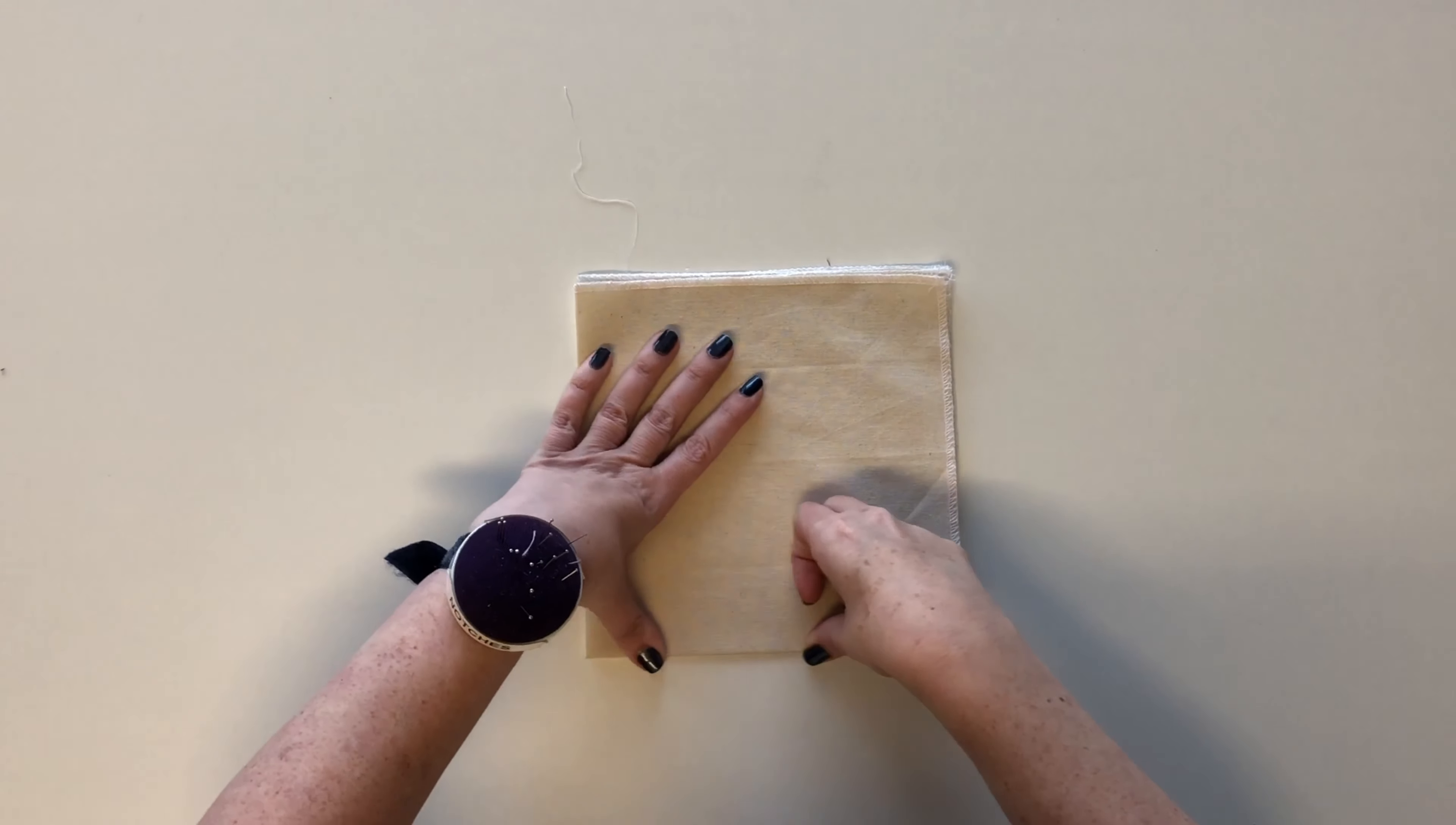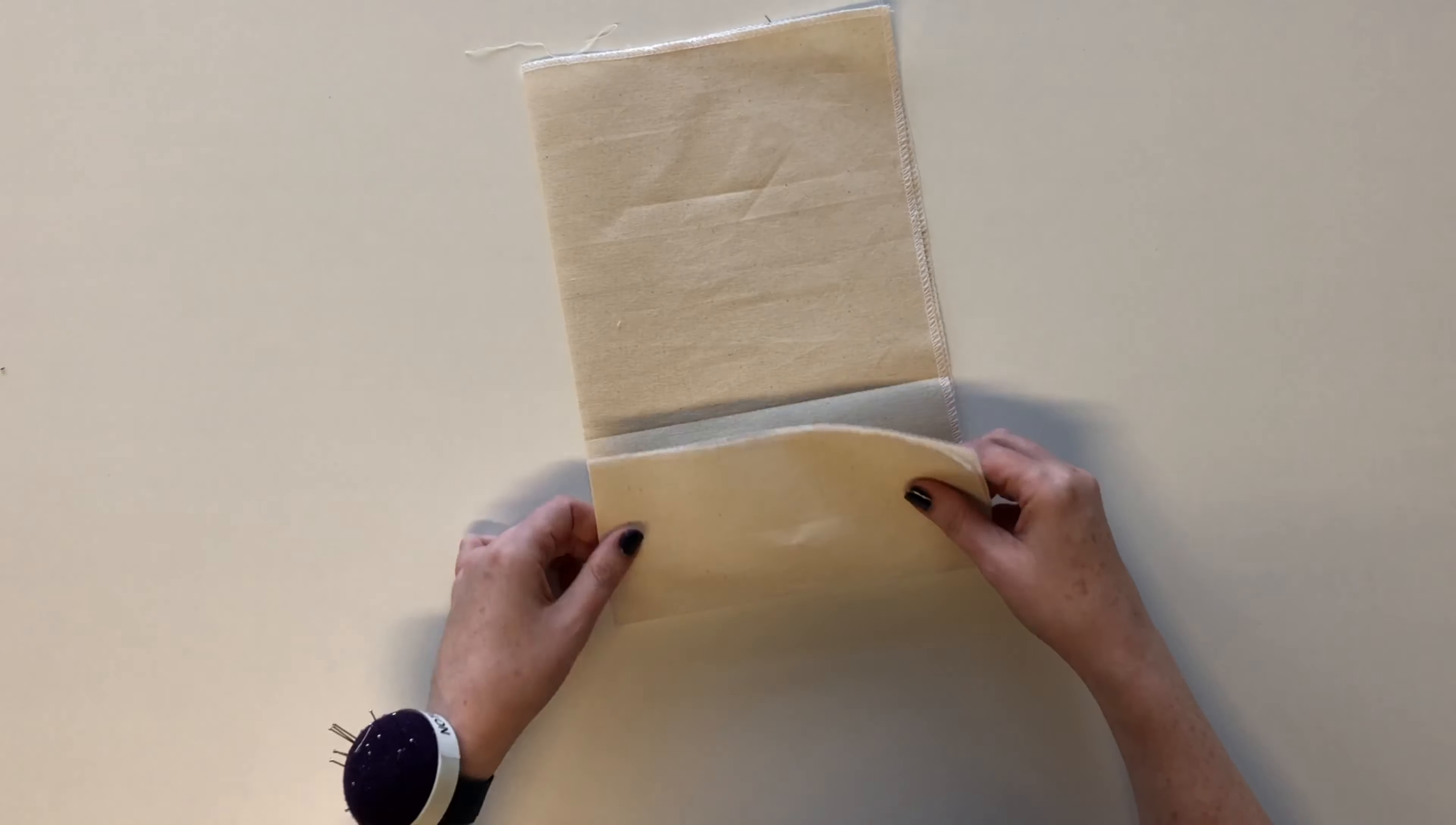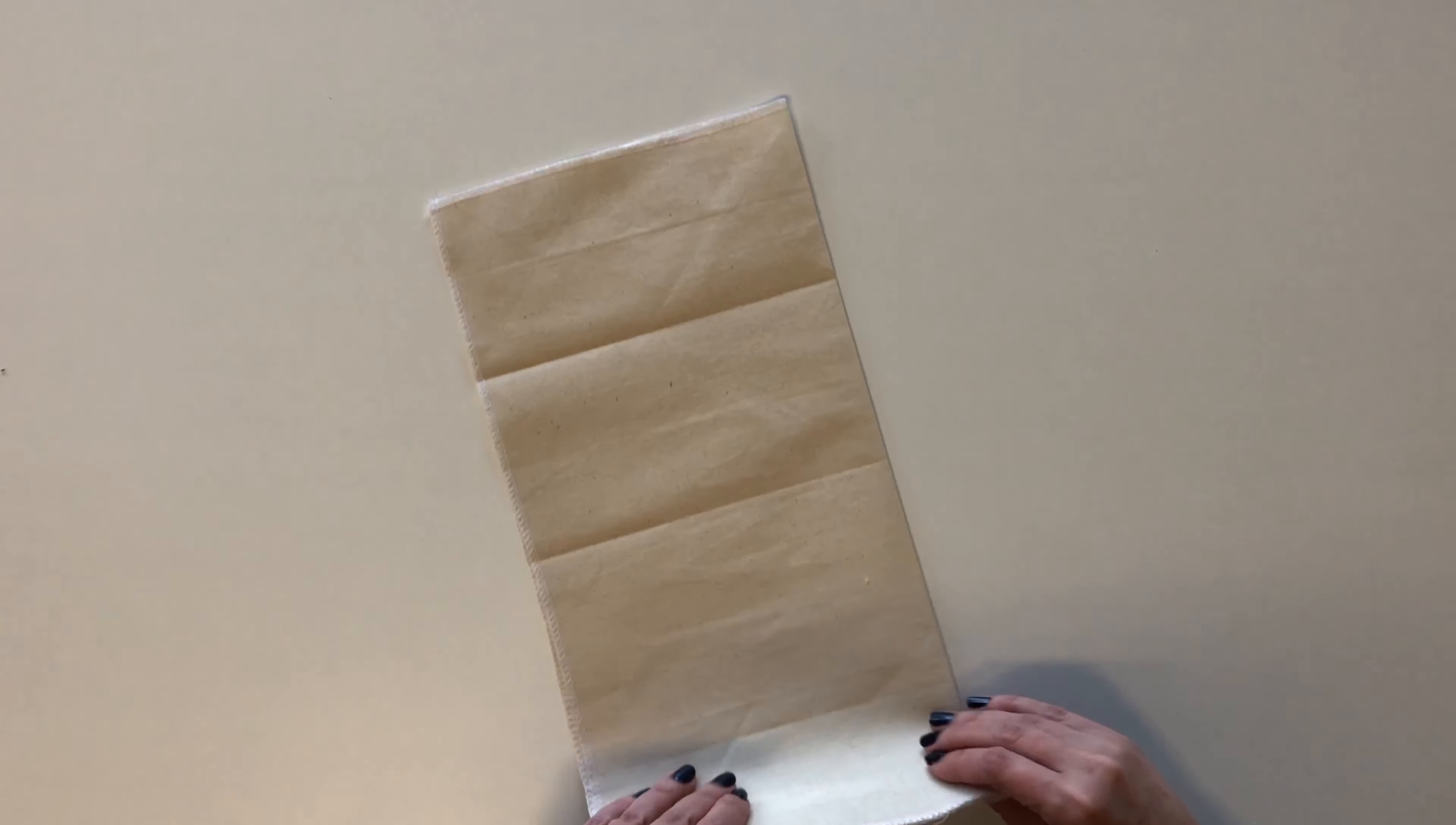Now you're making some guidelines so fold it in half again, undo it and then fold up to the guideline you just made, put a crease along that edge, undo it, turn it around and do the same to the other side.